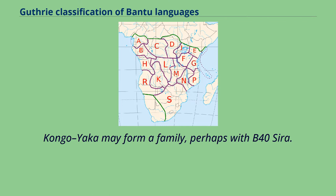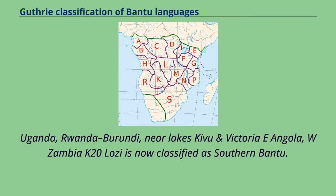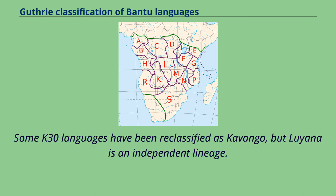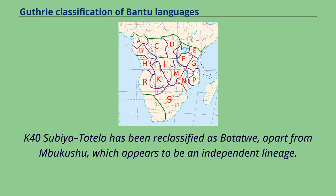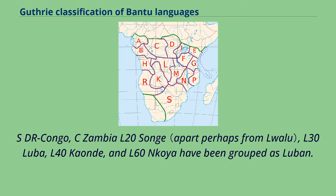Congo Yaka may form a family, perhaps with B40 Sira. Zone J covers Uganda, Rwanda, Burundi, and the area near Lakes Kivu and Victoria. Zone K covers eastern Angola and western Zambia. K20 Lozi is now classified as Southern Bantu. Some K30 languages have been reclassified as Kavango, but Lughana is an independent lineage. K40 Sabia-Totela has been reclassified as Batatwe, apart from Makushu, which appears to be an independent lineage. Zone L covers southern D.R. Congo and central Zambia: L20 Sanj, L30 Luba, L40 Kaunde, and L16 Koya have been grouped as Luban.